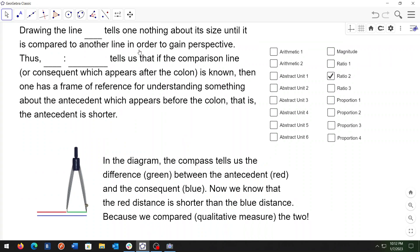So drawing the line here tells one nothing about its size until it's compared to another line in order to gain perspective. Thus, if we compare these two line segments with the colon, this tells us that the comparison line or consequent which appears after the colon is known.